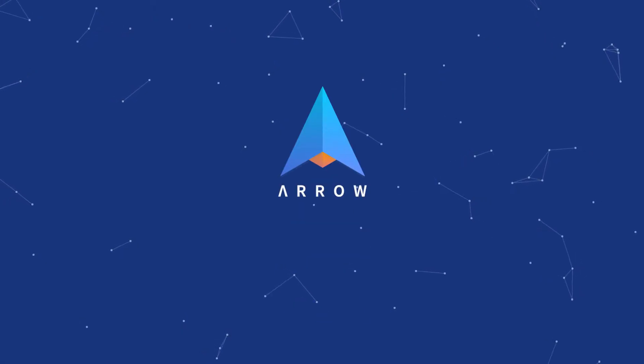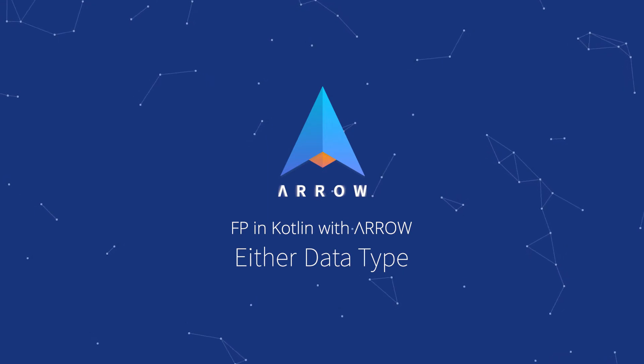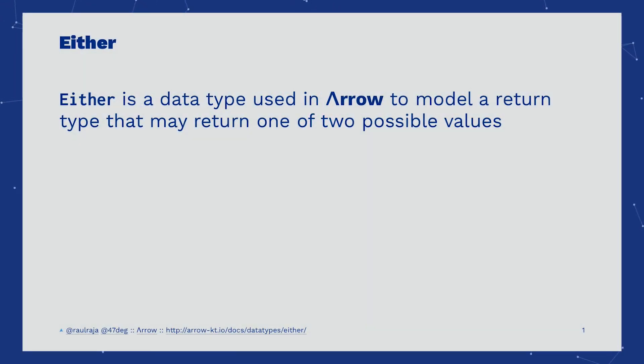Welcome to this series of videos about functional programming in Kotlin with Arrow. Arrow is a library that is packed with data types and type classes, bringing typed FP to Kotlin. In this video we're going to learn about the Either data type and what it's used for. Either is a data type in Arrow that we use to model when a function may return more than one value — it can be either one or the other.